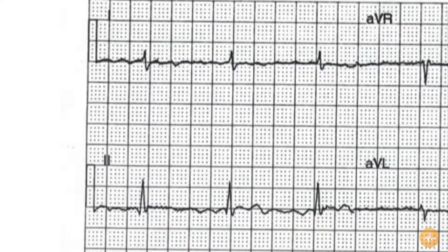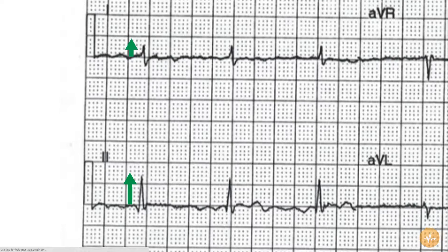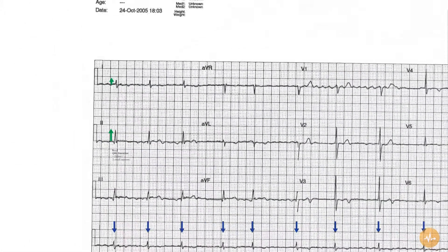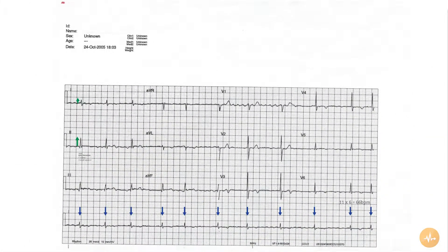The axis is normal, with an up-going complex in lead 1 and 2. The QRS duration is normal, at less than 3 small squares. There are no pathological Q waves present.